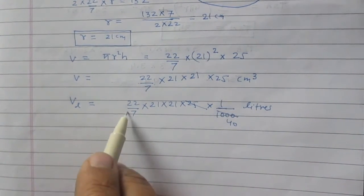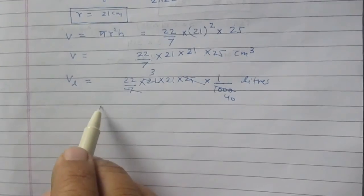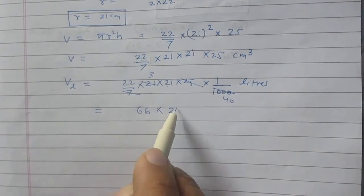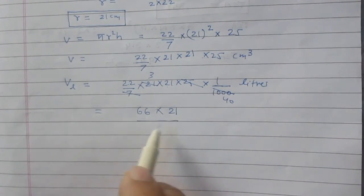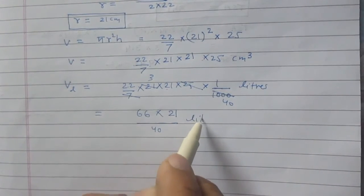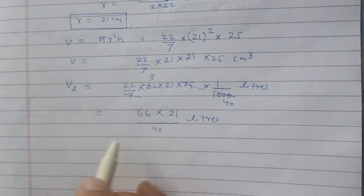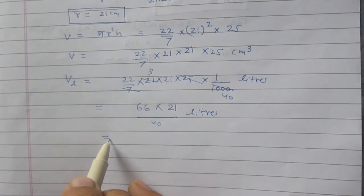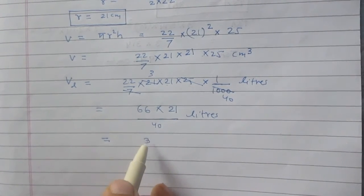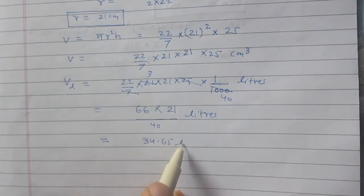We can reduce the terms like this. We will get 66 because 22 into 3 is 66, then 21 divided by 40. You can further reduce the terms. And finally, you will get the volume is equal to 34.65 liters.